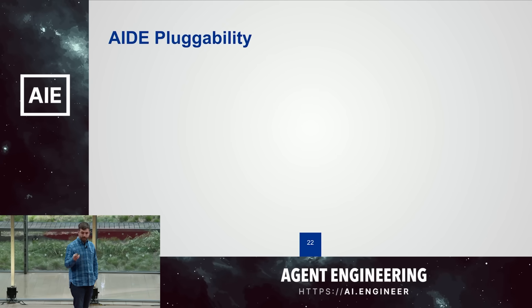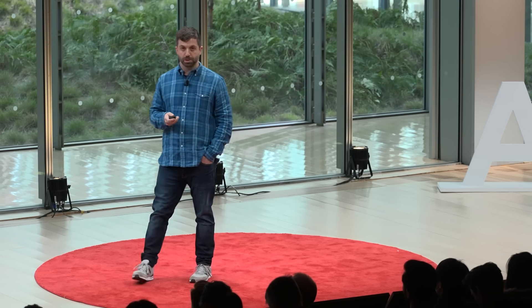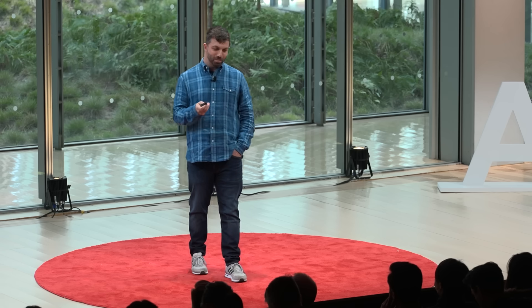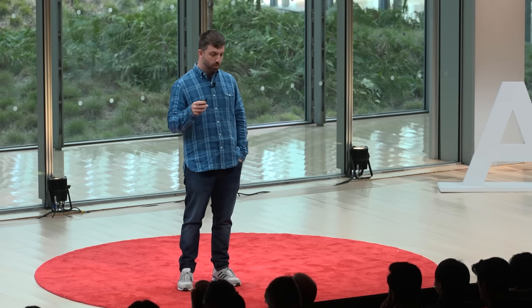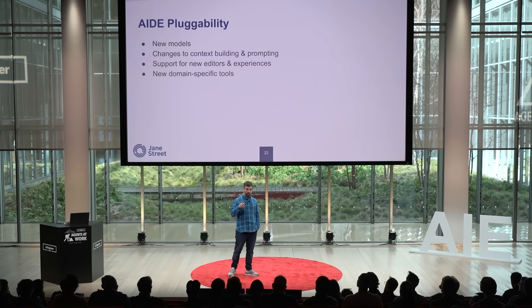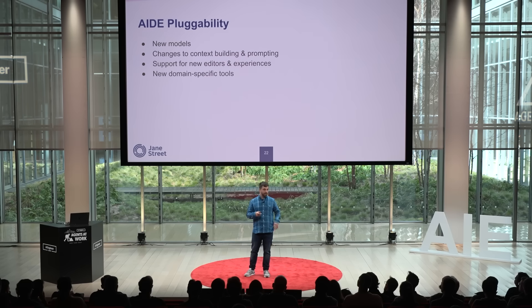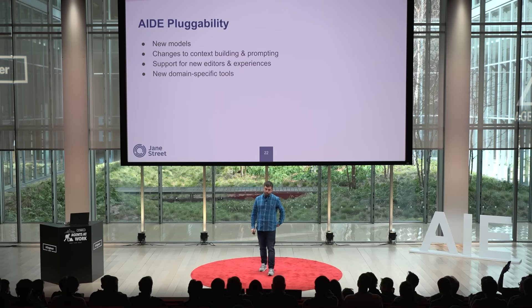AID's architecture lets us plug various pieces in and out. We can swap in new models, make changes to the context building, add support for new editors, and even add domain-specific tools — different areas of the company can supply tools available inside the editors, and they end up in all editors without writing individual integrations. AID also allows us to A/B test different approaches, sending 50% of the company to one model and 50% to another to determine which gets the higher acceptance rate. Every time something changes in large language models, we can change it in one place and have it available everywhere.